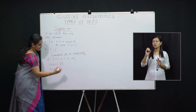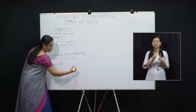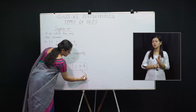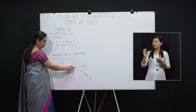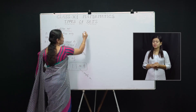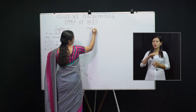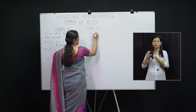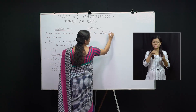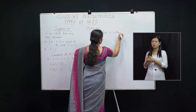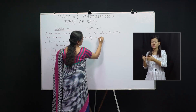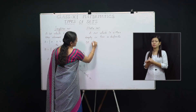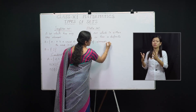Also, the empty set can be denoted by empty braces { } or by Phi — without any elements inside the bracket. The next type is Finite Set. A set which is either empty or has a definite number of elements is called a finite set.